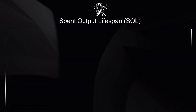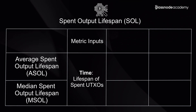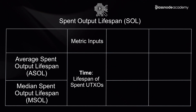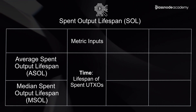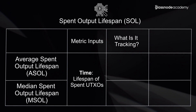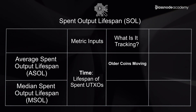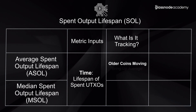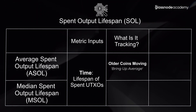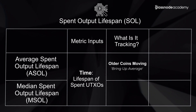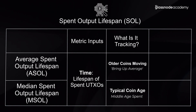When we look at the two metrics, ASOL and MSOL, the key metric input is time. We're looking at how old those spent UTXOs are, and we look at all of the spent UTXOs on that particular day to see how old they were in aggregate. What we're looking to track for the average SOL is old coins being on the move, because when you've got lots of old coins moving, it will bring up the average lifespan. The median takes the middle value of all those spent lifespans, representing a typical or middle-age spent coin.